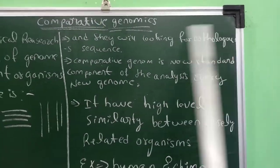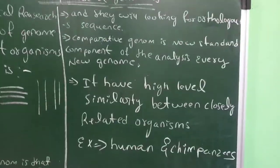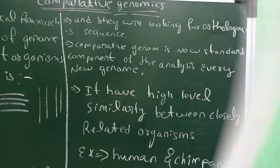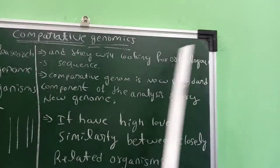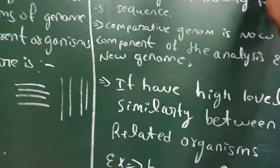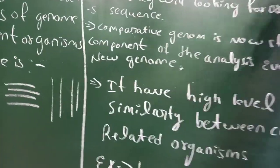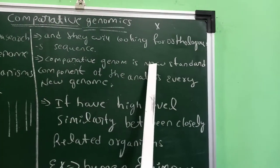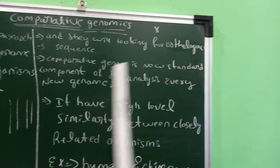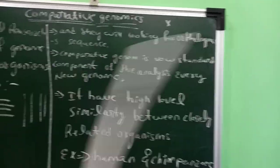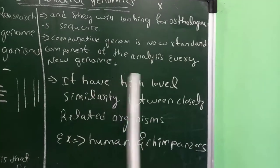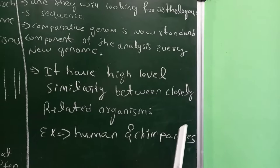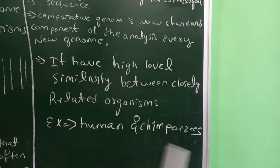They will also look for orthologous sequences. What is the meaning of orthologous sequences? Suppose homologous genes are broken — the separation of homologous genes is called orthologous sequences. Comparative genomics is now a standard component that analyzes every new genome. It has a high level of similarity between closely related organisms, for example, chimpanzee and human.